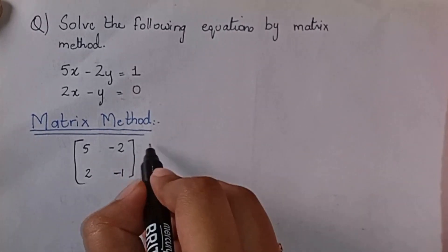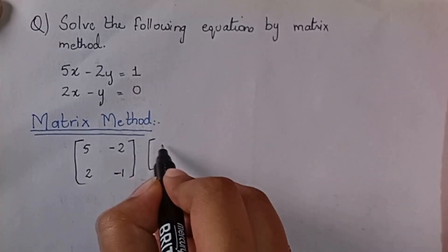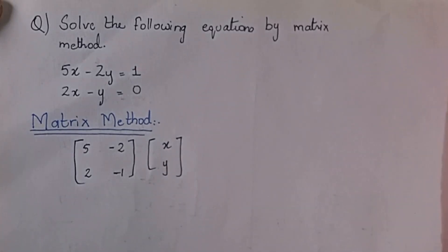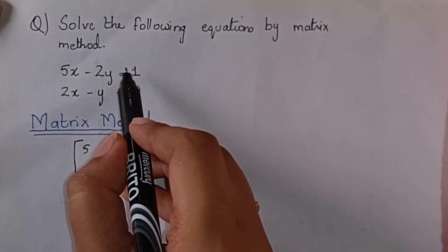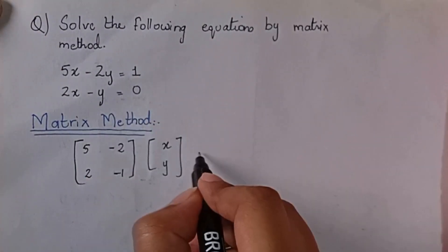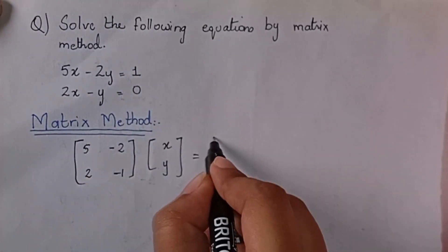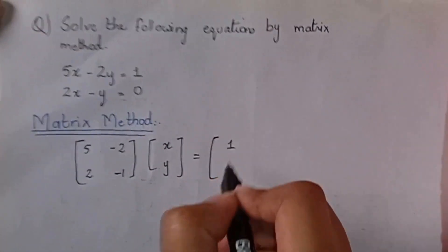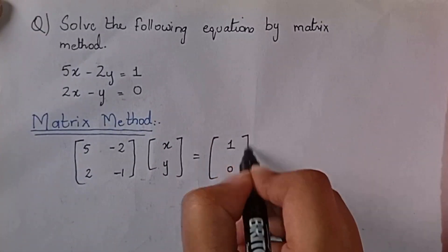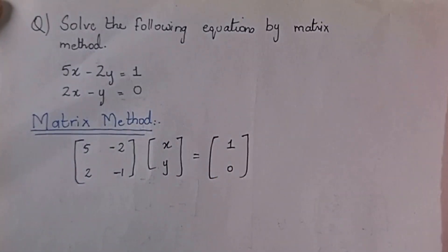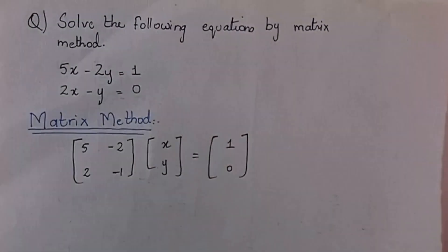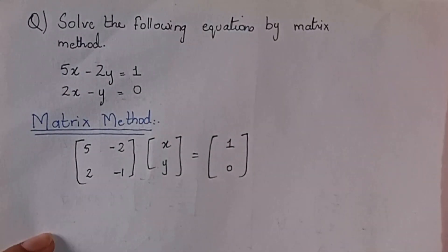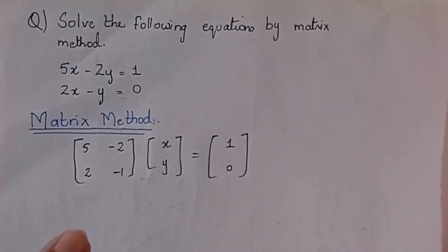The second matrix will be x and y. Then we will write the equals sign, and the next matrix — the constants — will be 1 and 0. So the first step is to convert the equations into matrix form.